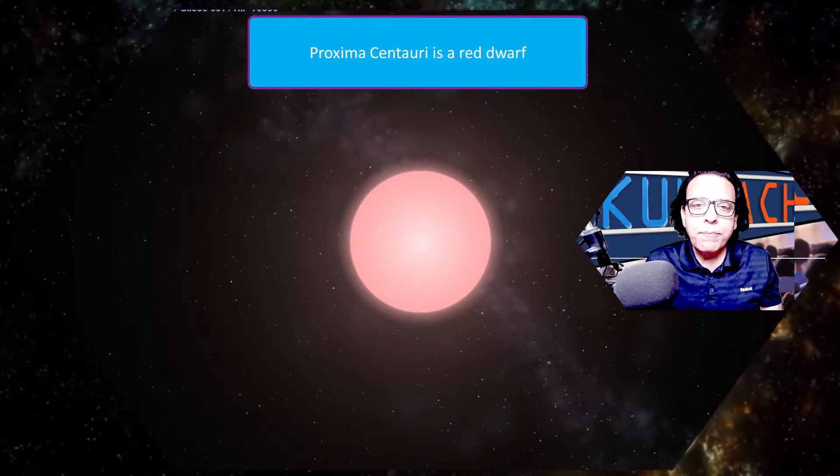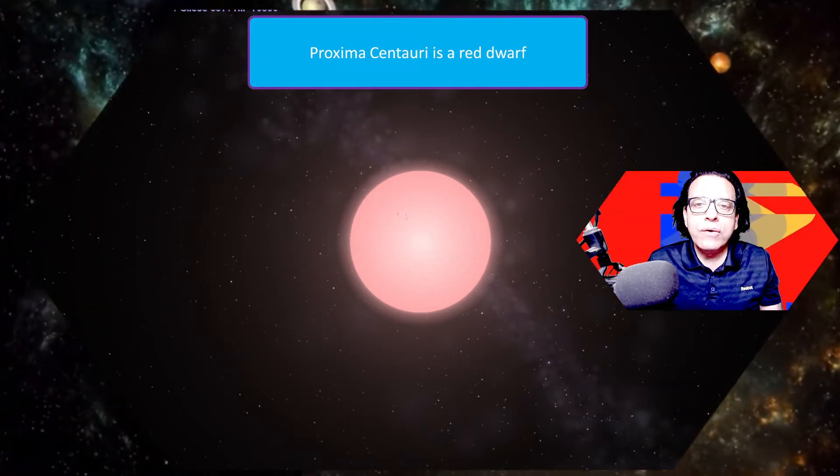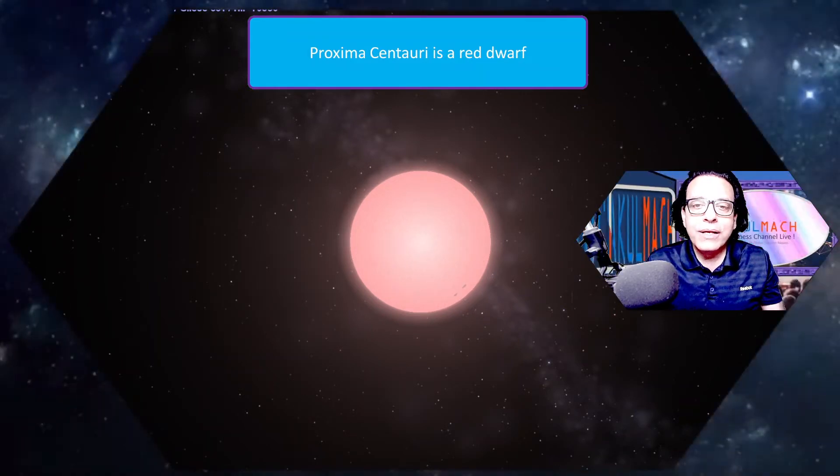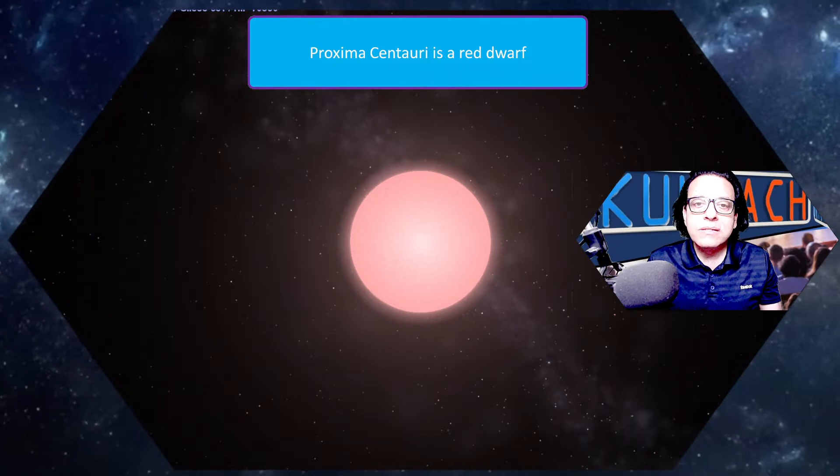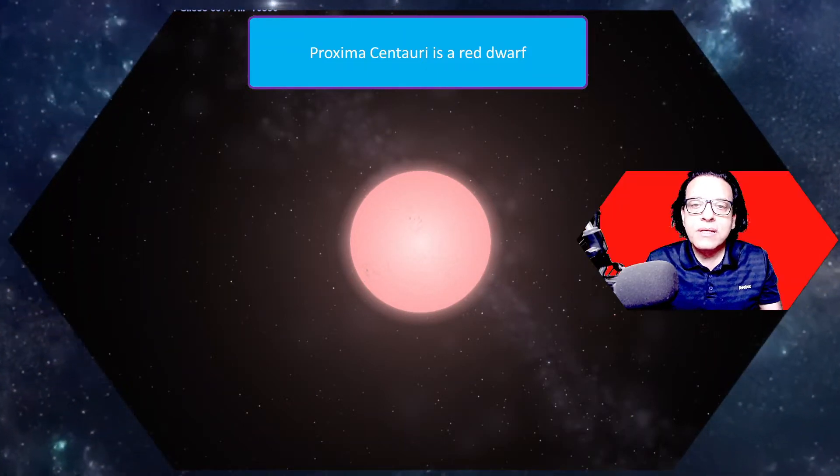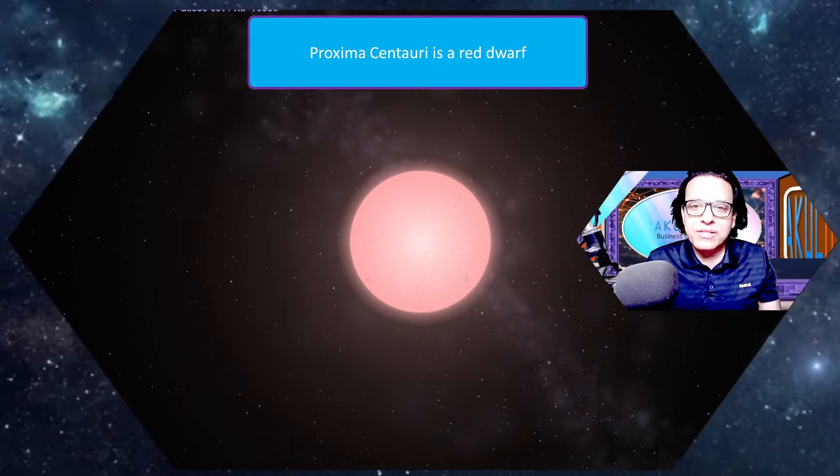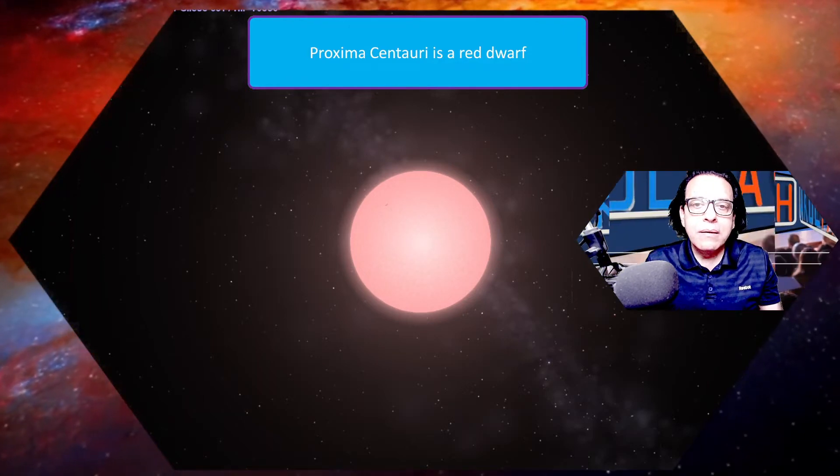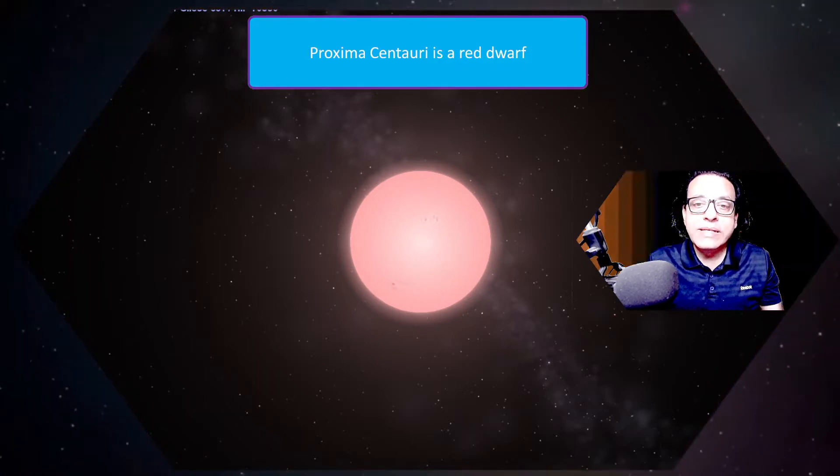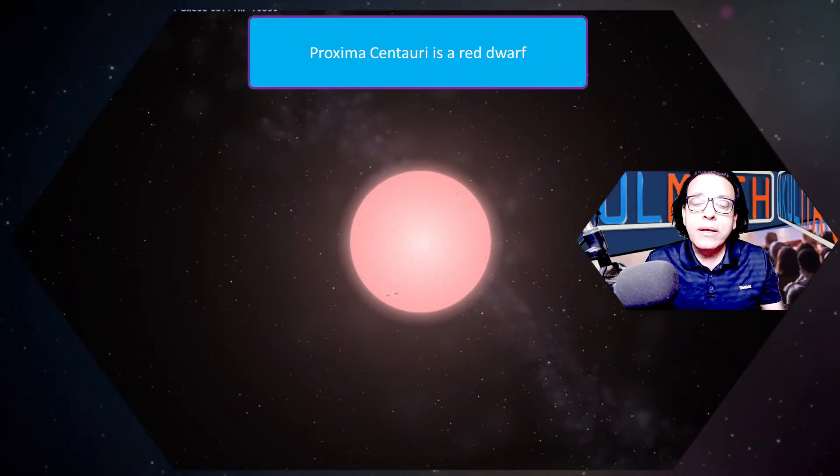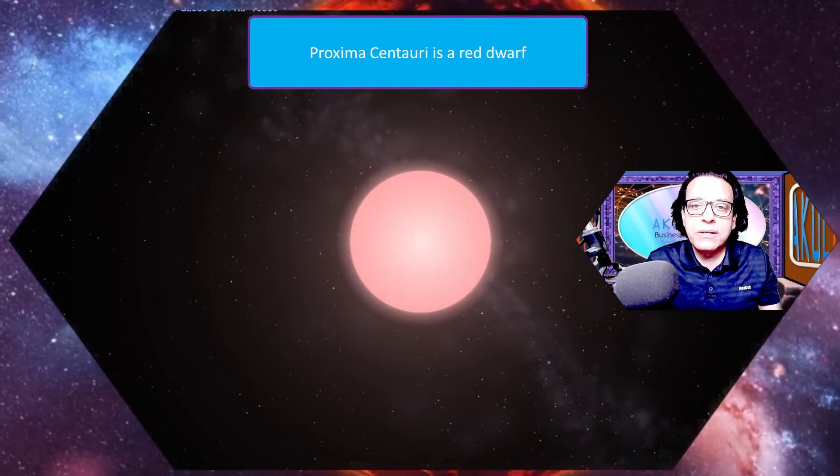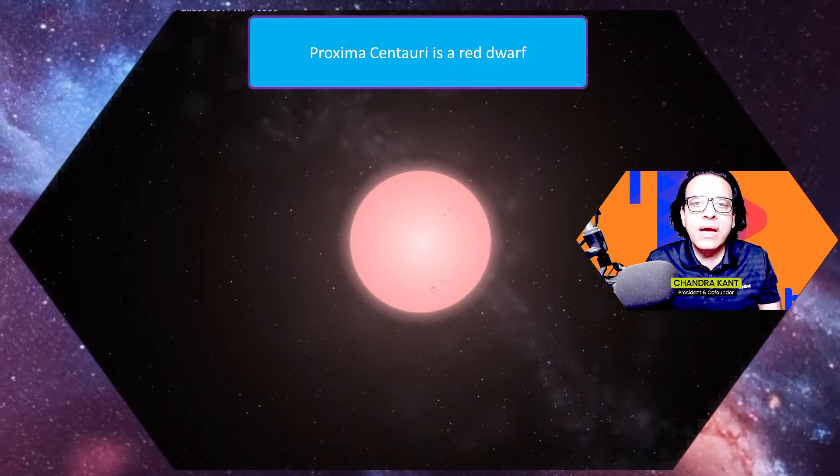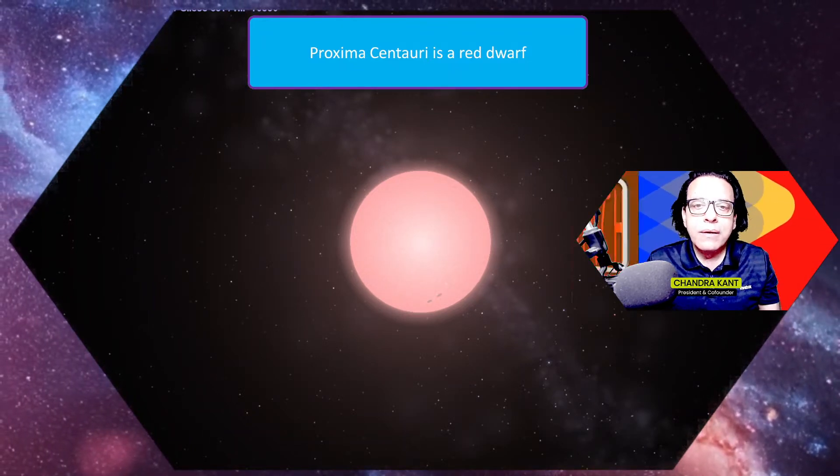Did you know that Proxima Centauri is a red dwarf star? Red dwarf stars are very special. If you look in the entire universe, almost 70% of stars are red dwarfs. These kinds of stars are more common than our sun-type stars, which are yellow. Red dwarfs are more common in the entire universe and they also have a long life.